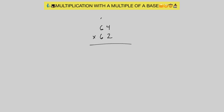Here we're working off a base 60, which is a multiple of base 10. 64 is plus 4 away from 60, and 62 is plus 2 away from 60. For our left hand side we get 66, and for our right hand side 4 times 2 gives us 8. To complete this problem, we multiply the left hand side by 6, since base 10 times 6 gives us 60. So 66 times 6: 60 times 6 gives us 360, 6 times 6 gives us 36, and 360 plus 36 gives us 396. So our final answer is 3,968.